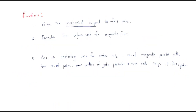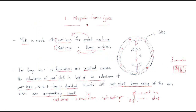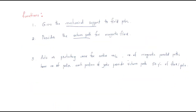The second function is to provide a return path for the magnetic flux. Flux enters from the north pole to the south pole, and the flux return path goes back through the yoke.